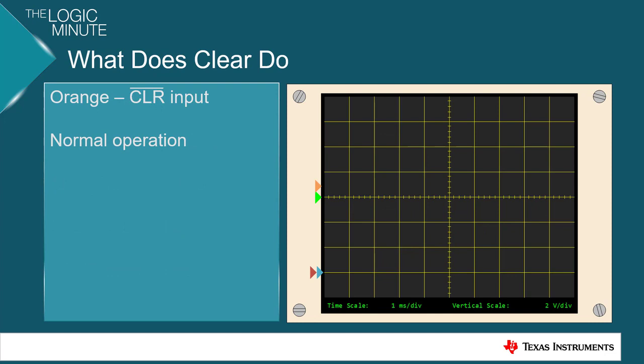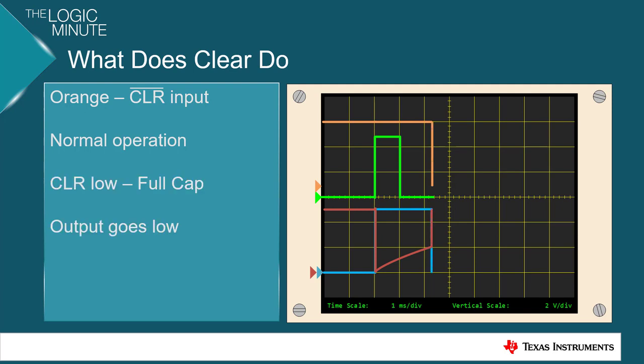So what does the clear pin from earlier do? Well, you can see that as it's high, we have normal operation from earlier. However, as clear goes low, our R external over C external goes high, and our output goes low. And then when clear returns high, we get one full pulse width of TW after the fact.